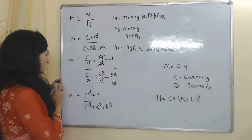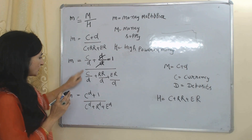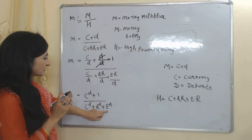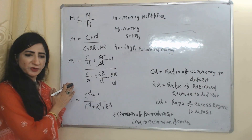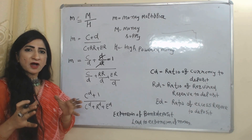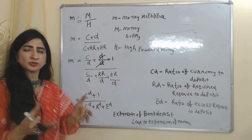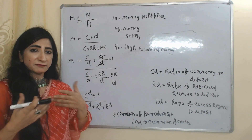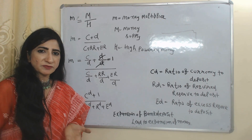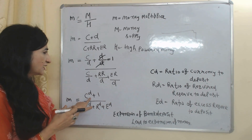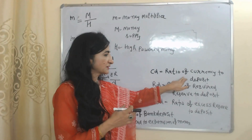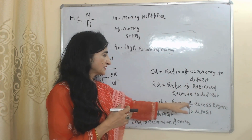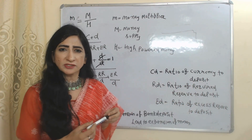For simplicity, we write C over D as CD, RR over D as RD, and ER over D as ED. So our final equation becomes: (1 plus CD) over (CD plus RD plus ED). With this equation we can know how much money has expanded through our monetary base. In this equation, CD represents the ratio of currency to deposit, RD represents the ratio of required reserve to deposit, and ED represents the ratio of excess reserve to deposit.